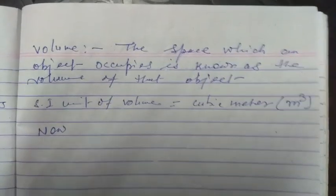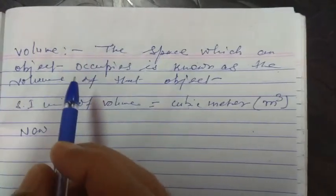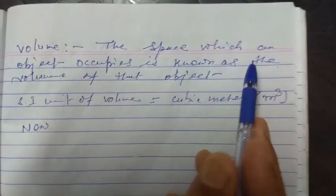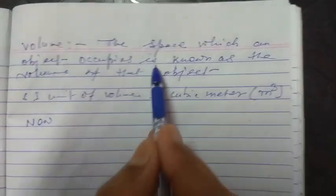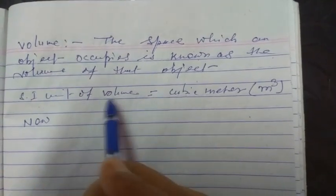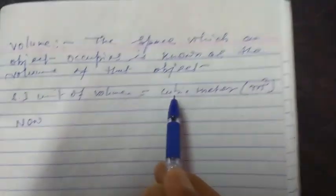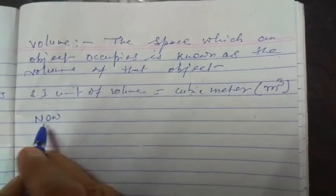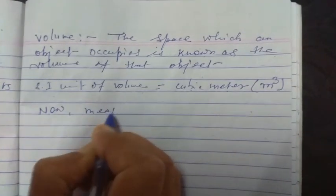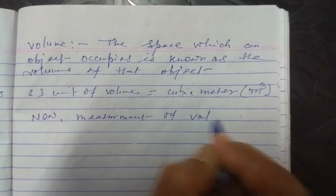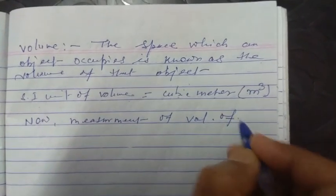Students, already you know that the definition of volume: the space which an object occupies is known as the volume of that object. The SI unit of volume is cubic meter, that means meter cube. Now, measurement of volume of regular solid.